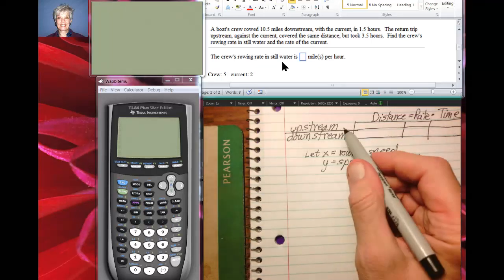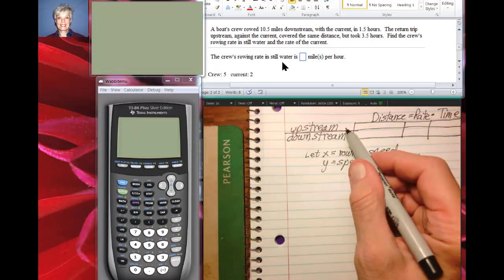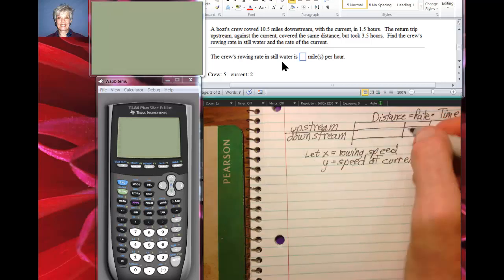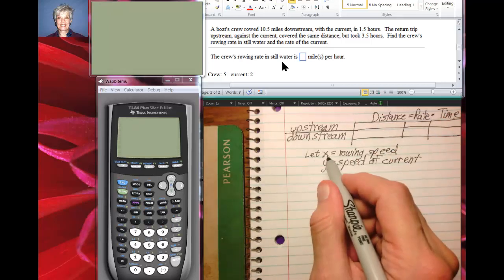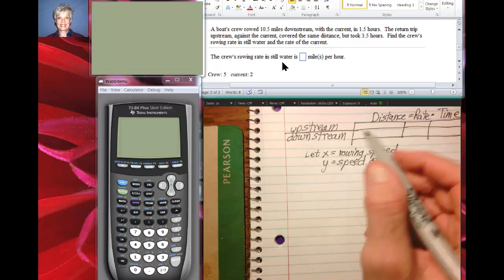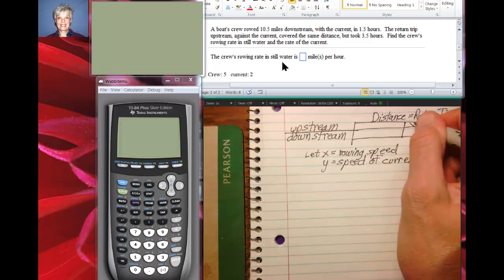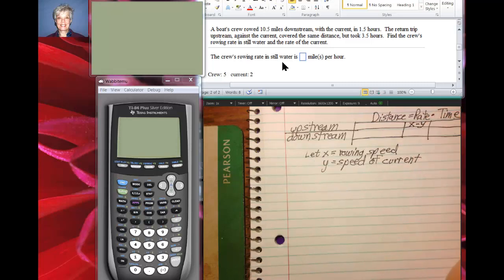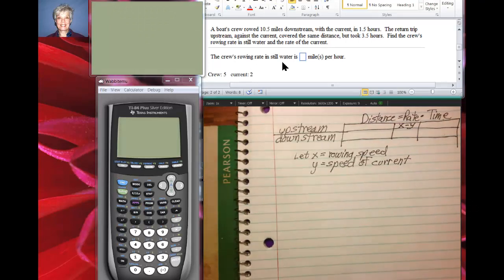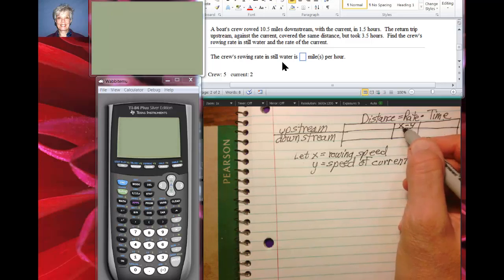Okay, when you go upstream against the current, the speed of the current is going to slow you down. So we say X minus Y for the rate of speed. Notice my little table I made here. If you look in the book you'll see this same table. Distance equals rate times time. But X minus Y is the speed of the rowing, the row speed minus the current speed.